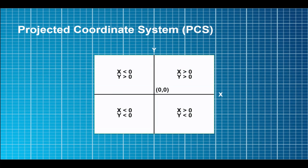In a projected coordinate system, we're actually dealing with a flat map. We're dealing with XY values on a Cartesian grid. These XY values are going to be in yards, meters, miles — a linear measurement, as opposed to the angular measurements of a geographic coordinate system.